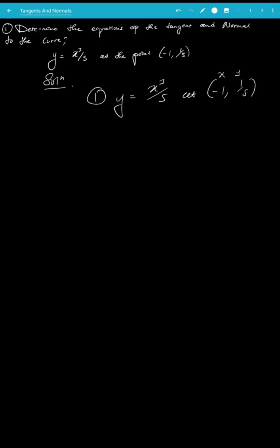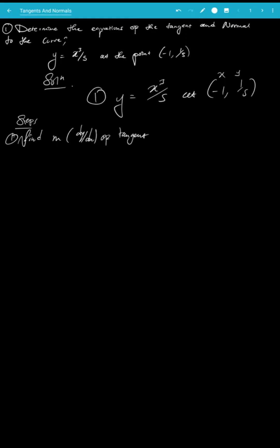To find the equation of the tangent, the first thing you need to do is find the gradient of the tangent. Step one: find m, which is dy/dx of the tangent. You're finding the gradient of the tangent at x equal to the given x-coordinate, which we'll call x1.